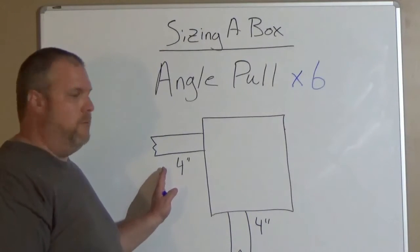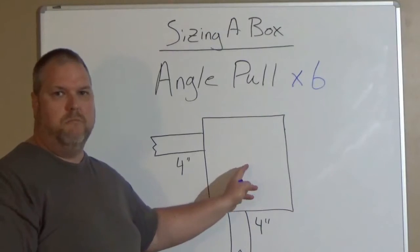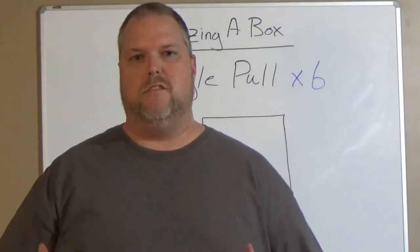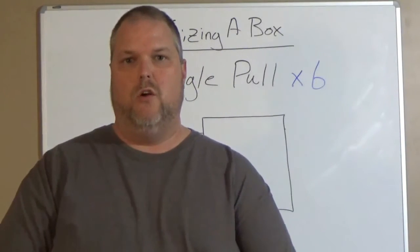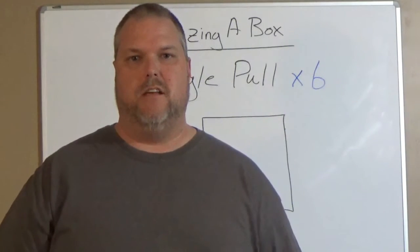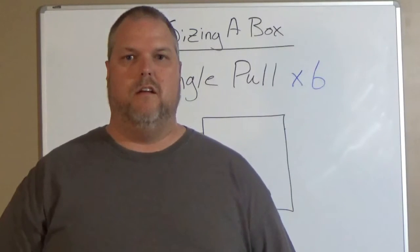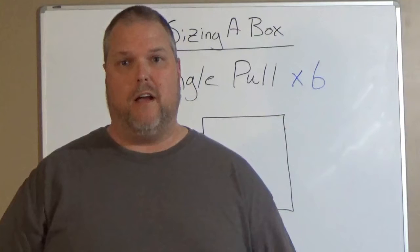Here I have an angle pull. I have two 4-inch conduits going into a junction box, but what size junction box do I put in? When you guys get out in the field, you're going to get to the situation where you're going to have to size junction boxes. You can't just put any box in. If you put too small of a box, you're not going to have the right size junction box, and trust me, the inspector will pick up on it.